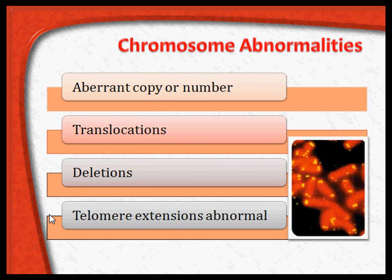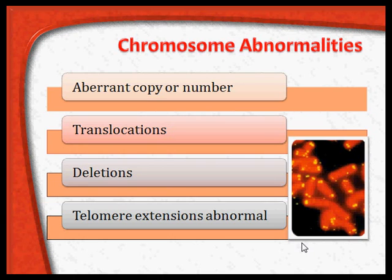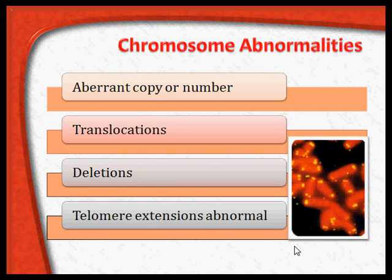Telomere extension abnormalities: the telomere is the end region of the chromosome, as you can see here. The fluorescent yellow-colored tips are the telomeres. It is known that these telomeres decide the longevity of a person — the longer the telomeres, the greater the longevity. There is genetic engineering going on to increase the length of telomeres so that longevity can be increased and the aging process retarded or even reversed.